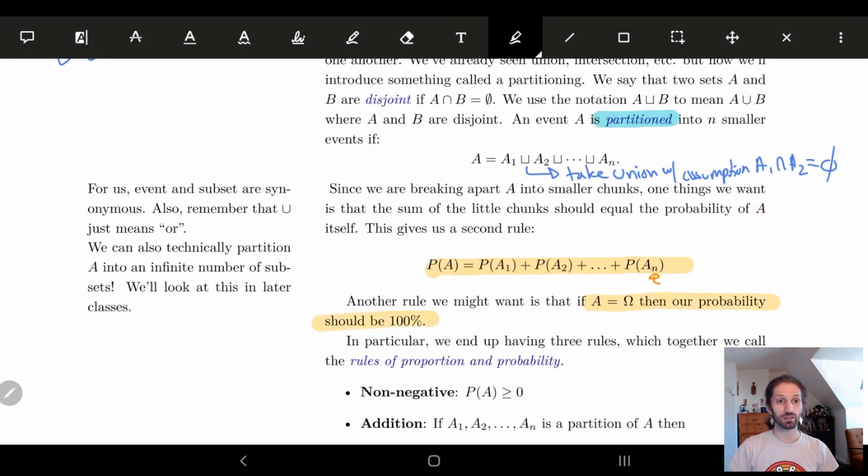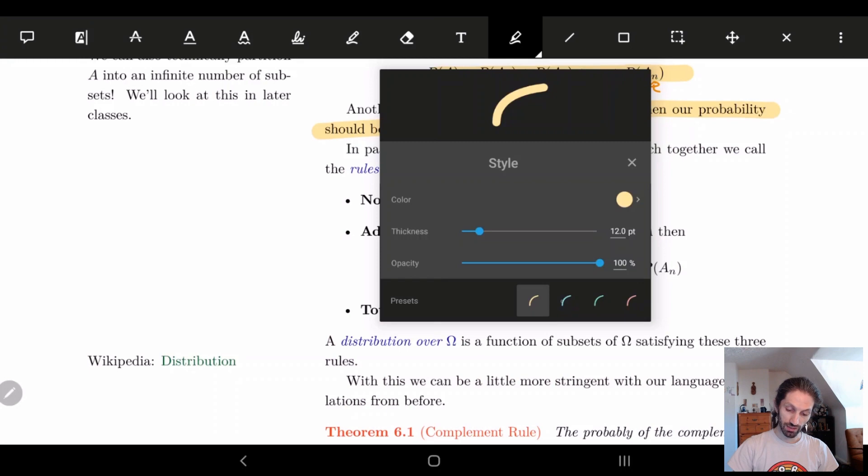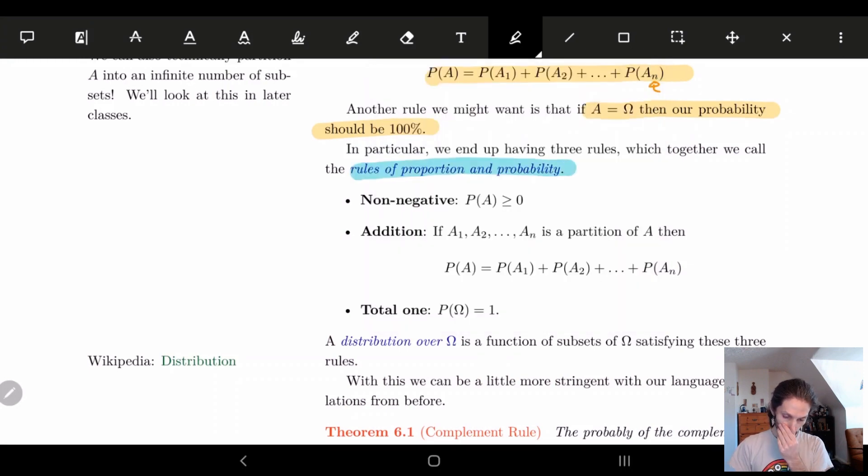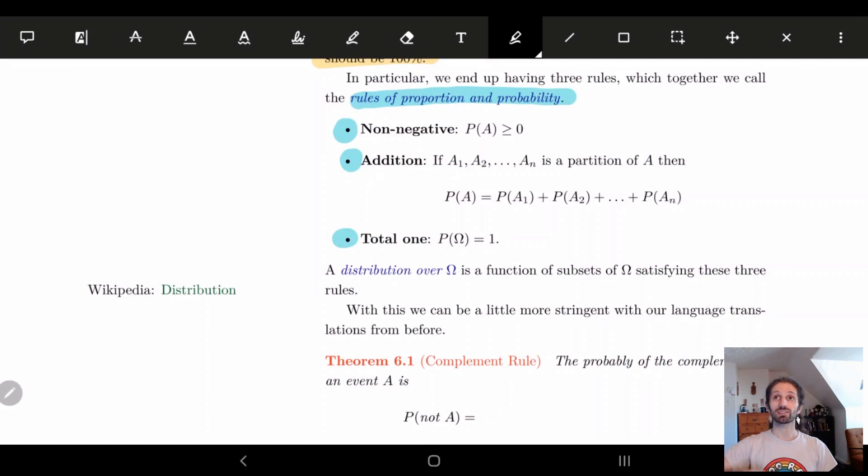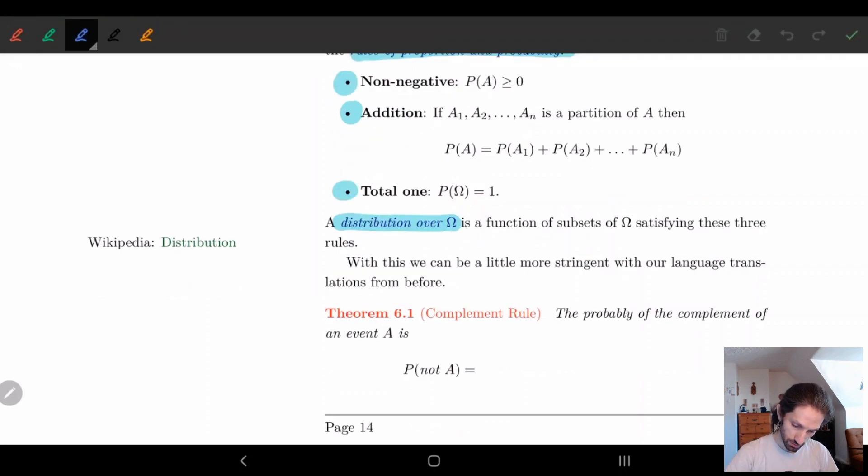If A is equal to omega, then our probability should be 100%. And these are the rules we're basically going to force onto our probability function. And this we'll call the rules of proportion and probability. So here we have three different rules. One, we want that the probability of every set to be non-negative. We want addition to hold. So if I can partition my set into smaller parts, then I should be able to just sum up their probabilities. And then the probability of the whole set is equal to one. So whenever we have a probability function that satisfies these three things, then we call it a distribution over omega. So a distribution over omega is a probability function that satisfies these three.